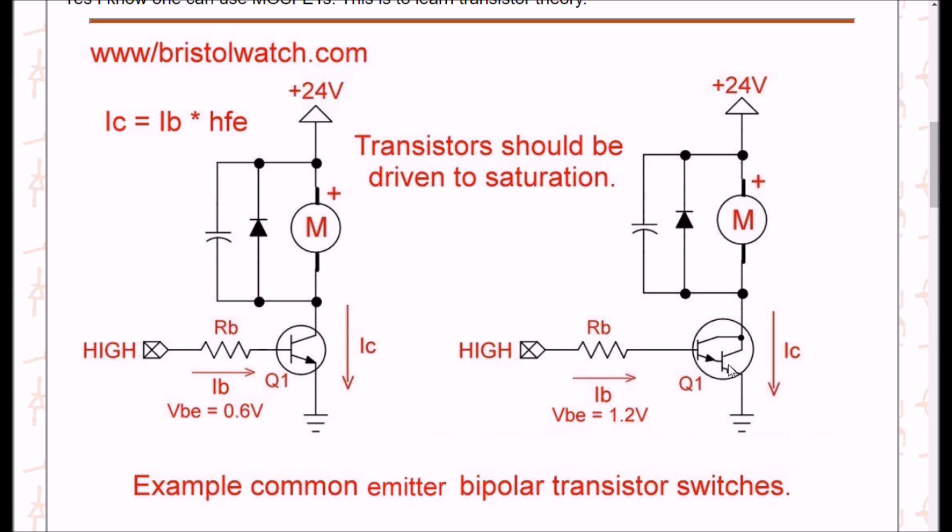Your problem with both of these particular transistors is you cannot drive them with a Raspberry Pi. Its I/O pins do not produce sufficient current. You may even have trouble in some cases with Arduino, which I think is rated for 40 milliamps. When you drive a transistor into saturation, you want to apply enough current to turn this transistor fully on.